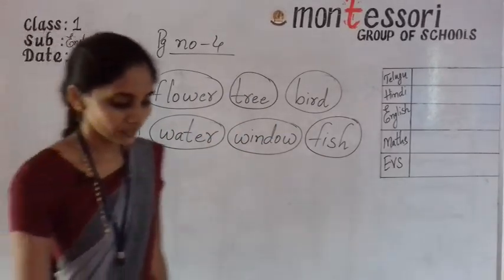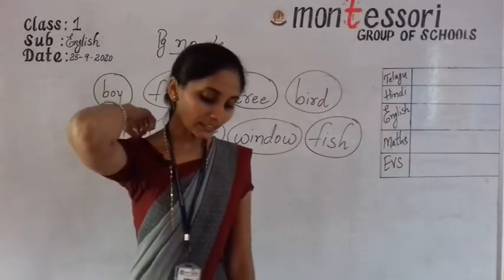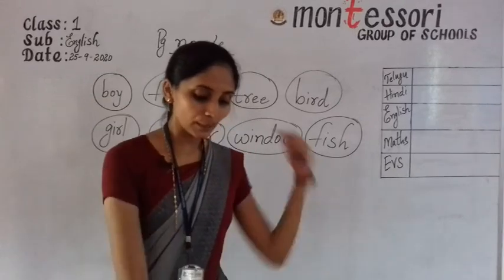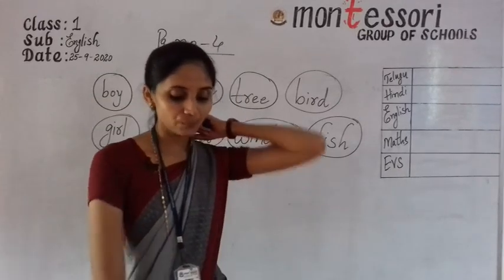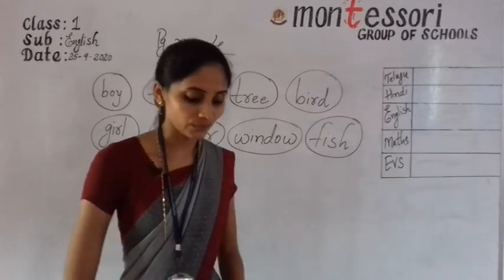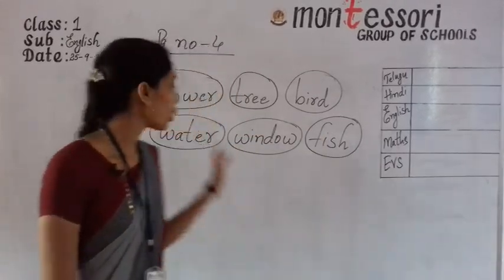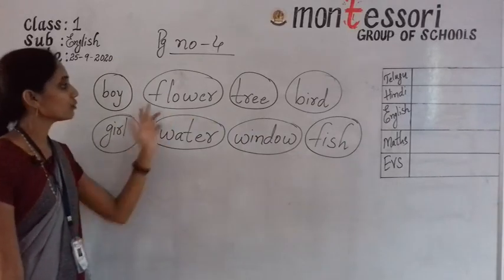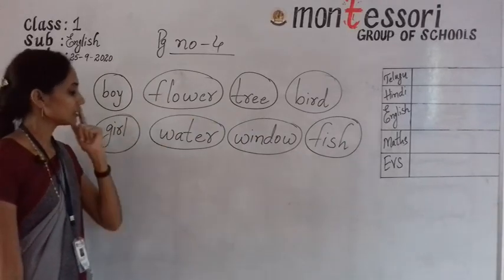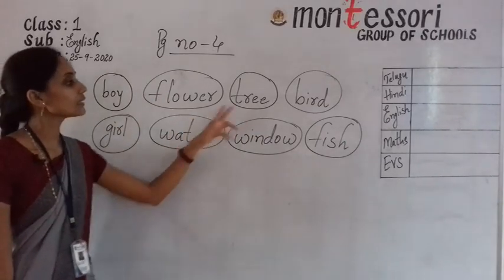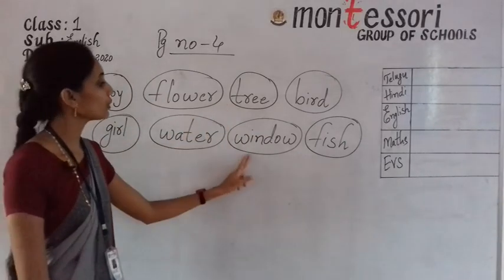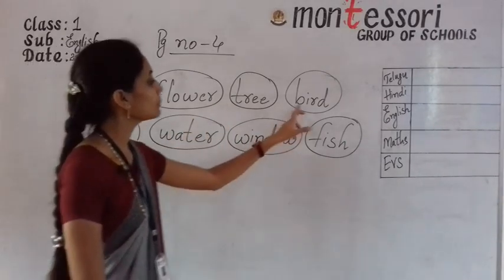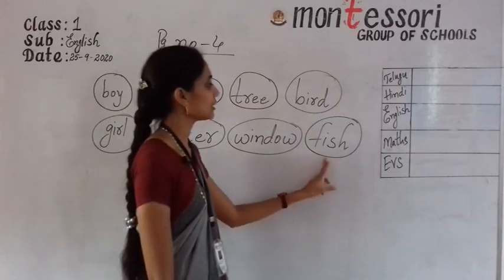Now, everything that you see in the picture is a naming word: boy, girl, flower, water, tree, window, bird, fish.